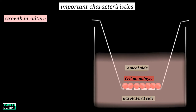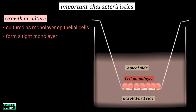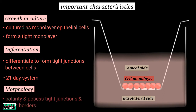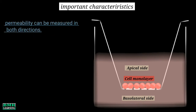Important characteristics of CACO2 cell lines: In culture, they are cultured as monolayer epithelial cells and form a tight monolayer growing on a permeable filter support. When cultured as a monolayer, they differentiate to form tight junctions between cells, serving as a model of passive diffusion of compounds across the monolayer. The differentiation process is a 20-day process in standard culture medium. The cells show polarity and possess tight junctions and brush borders.